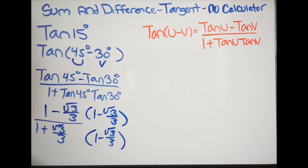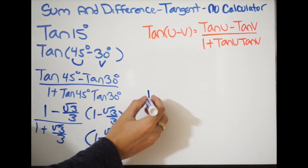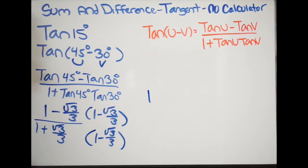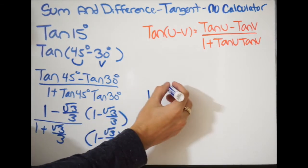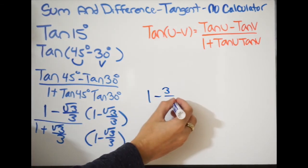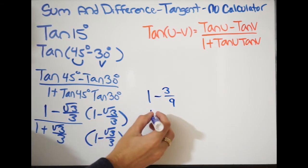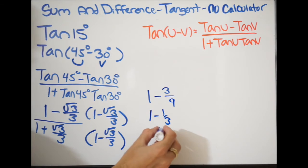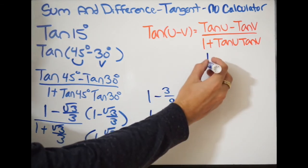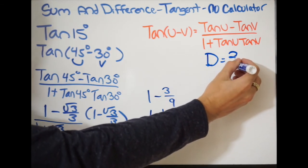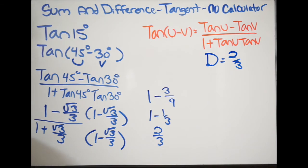We have videos on the conjugate, so please check that out if you're unfamiliar. Now we use FOIL — first, outside, inside, last. Multiplying the first terms gives 1. The outside and inside terms naturally cancel. For the last terms, square root of 3 times square root of 3 is 3, and 3 over 9 simplifies to one third. So we get 1 minus one third, which is 2 over 3. I'll record that as D equals 2 over 3.